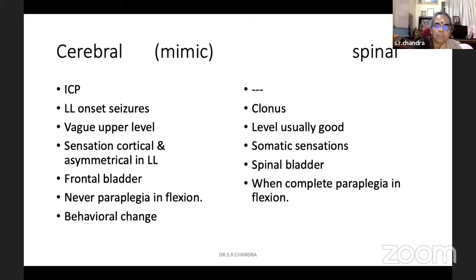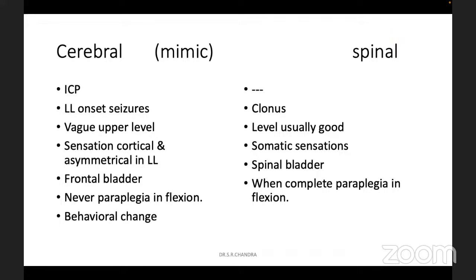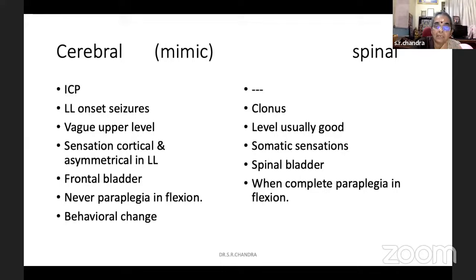After excluding all these, pan-cord and down, comes the cerebral paraplegia — features of raised intracranial pressure may be there, because it is falx region tumors, vascular anomalies in that region, or even venous sinus thrombosis in that area. So if there is raised intracranial pressure, you know that it is some cerebral pathology. Usually in spinal paraplegia, raised intracranial pressure is not there, but occasionally it can be.